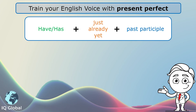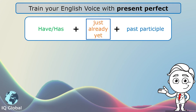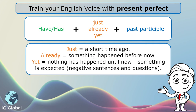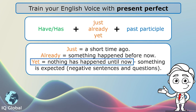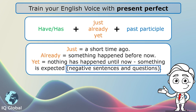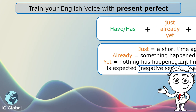We can also use have or has, depending on the subject, plus just, already, or yet, plus the past participle. Just means a short time ago. Already means something happened before now. Yet means nothing has happened until now, but something is expected — used in negative sentences and questions.